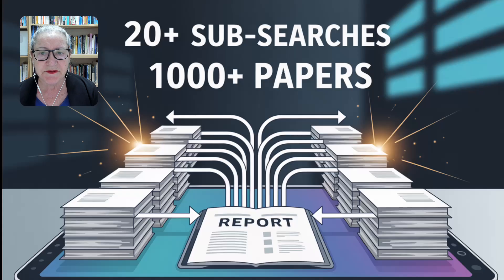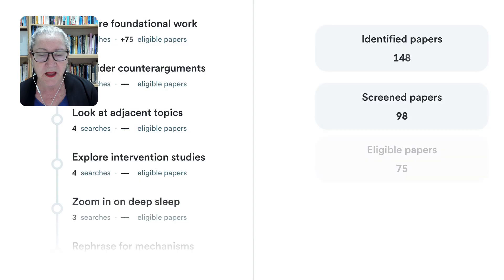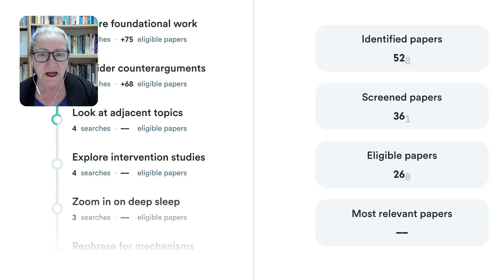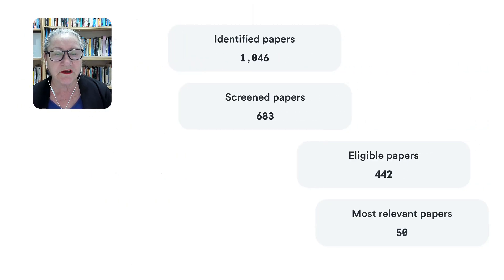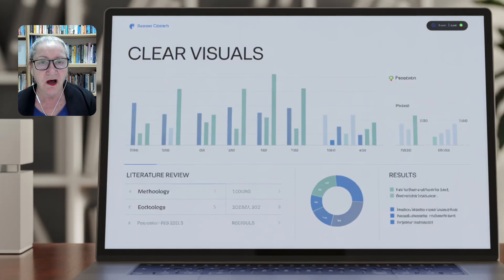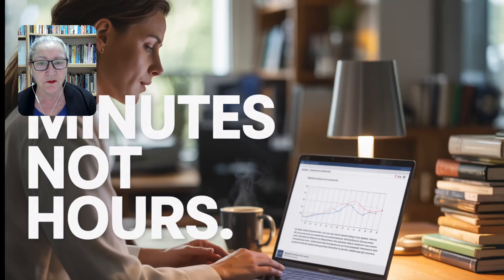Here's how it works. Deep Search takes your research question, breaks it down into over 20 targeted sub-questions, and reviews 1,000-plus papers. From there, it organizes the findings into a structured, cited report with clear visuals, authors, and sources — all in just a few minutes.